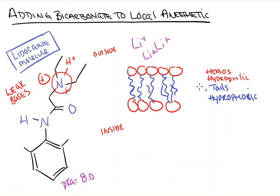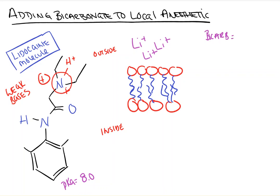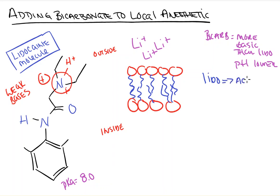The bicarb is concentrated so that it is more basic than lidocaine, meaning its pH is higher. Therefore, when you mix lidocaine with the bicarb, the lidocaine ends up becoming the acid relative to the bicarb. This causes the lidocaine molecule to go from having a positive charge on that nitrogen to being neutral, because it gives up that proton to the bicarb, acting as the acid relative to it.